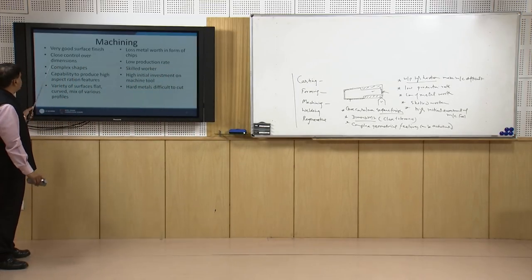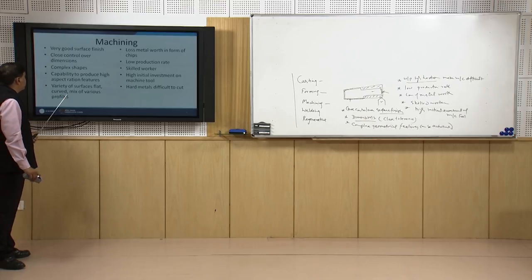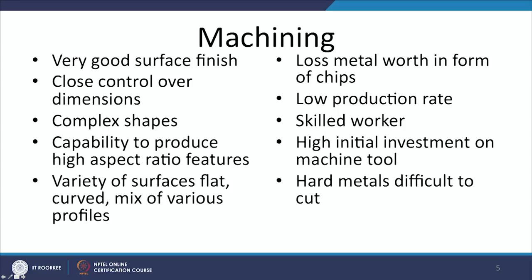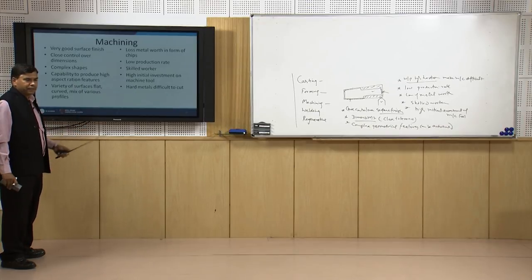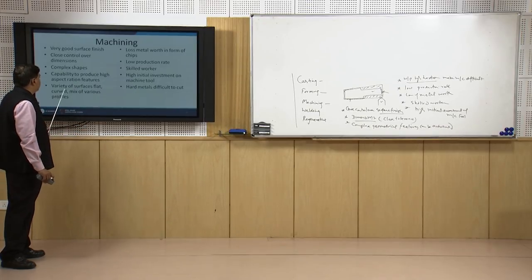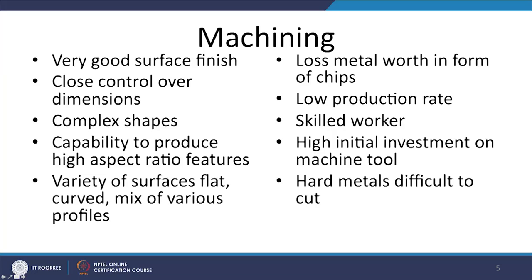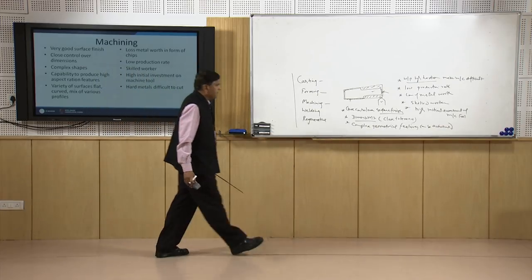On the advantage side: very good surface finish, very close control over dimensions, and very complex shapes can be produced. Machining is capable of producing very high aspect ratio features which otherwise cannot be made using forming and casting processes, and a variety of surface features — flat, curved, or mixed profiles — can be easily made. These are the advantages and limitations associated with machining processes.